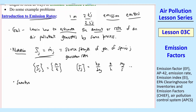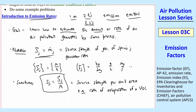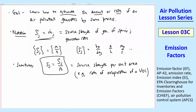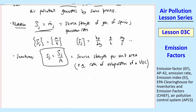Sometimes we divide by area, so we use little s_J equal to capital S_J over area A. This is called the source strength per unit area. An example would be the rate of evaporation of a VOC — what you care about is the surface area through which it's evaporating. Little s_J has dimensions of mass per length squared per time, with typical units such as milligram per meter squared second or gram per meter squared hour.